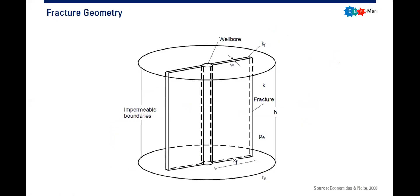To describe hydraulic fractures, I will present the fracture geometry. We usually describe hydraulic fractures by three geometry parameters: xf, which is the half length of the fracture; w, which is the width or opening of the fractures; and h, the thickness or height of the fracture.